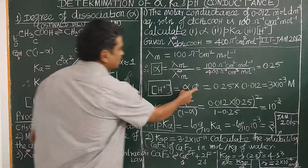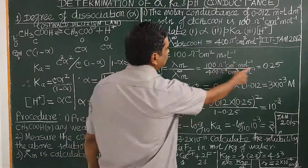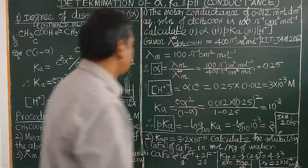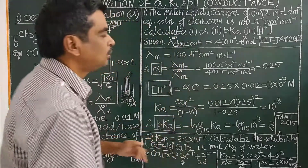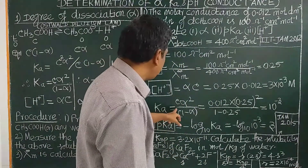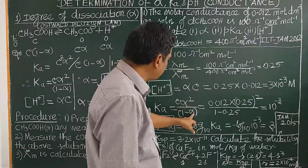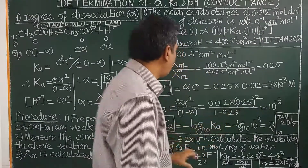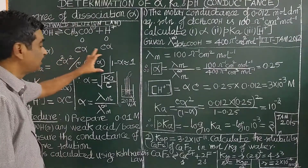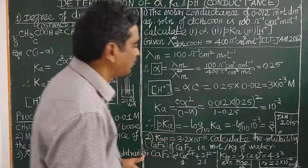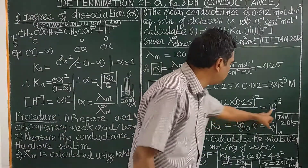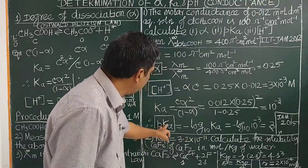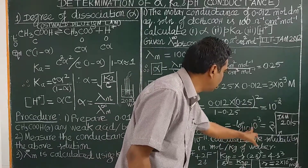Concentration of H⁺ = Cα = 0.012 × 0.25 = 3 × 10⁻³ mol/L. Ka = Cα² / (1 − α). Since alpha is not negligibly small here, we do not neglect 1 − α. Ka works out to approximately 10⁻³. pKa = −log(Ka), and pH = −log[H⁺].